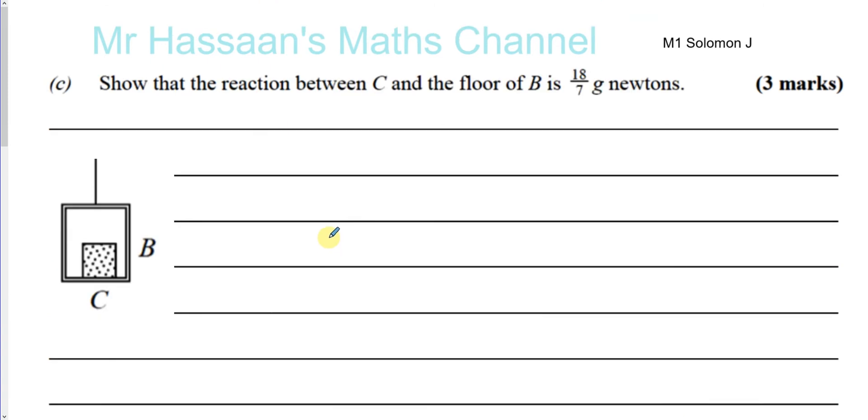Now for part C, show that the reaction between C and the floor of B is 18 over 7G Newtons. Now what we need to do here, when we're trying to find the reactions, we have to kind of go and look at it in a bit more kind of, you know, smaller detail. We've got to kind of like zoom in.